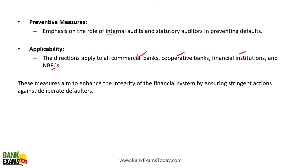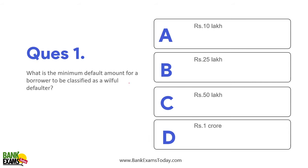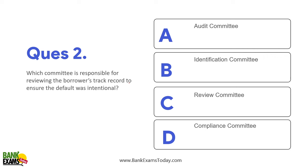These measures aim at enhancing the integrity of the financial system by ensuring stringent actions against deliberate and willful defaulters. The kinds of questions you can expect in the exam: what is the minimum default amount to be classified as a willful defaulter? The minimum default amount is 25 lakh rupees. Which committee is responsible for reviewing the borrower's track record to ensure the default was intentional? That is the identification committee.